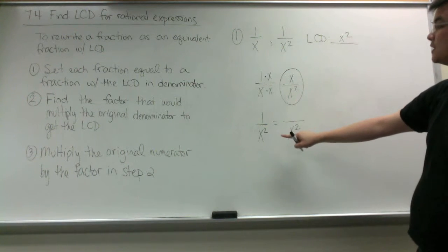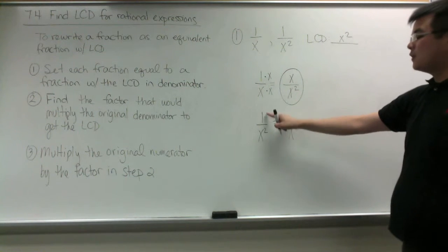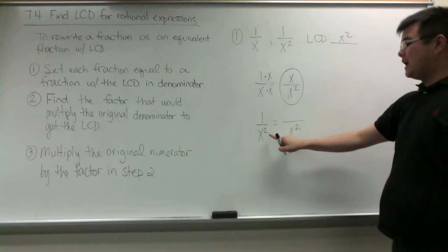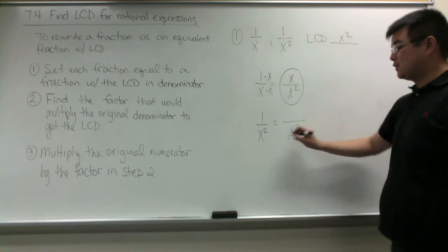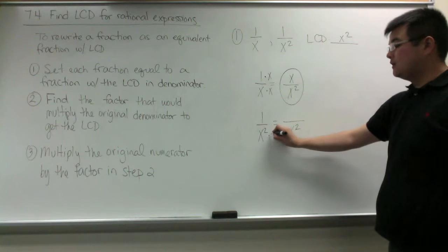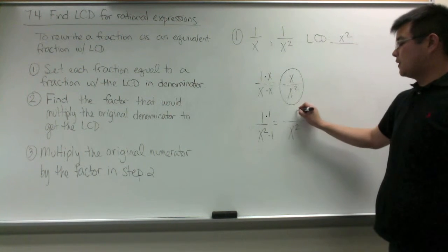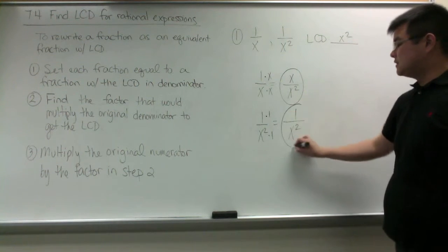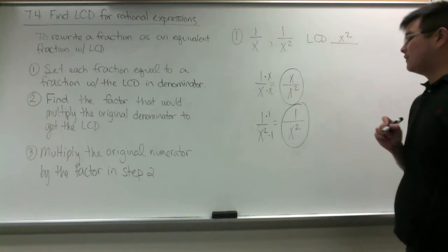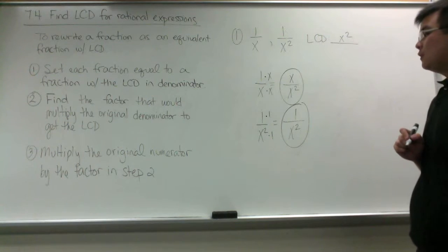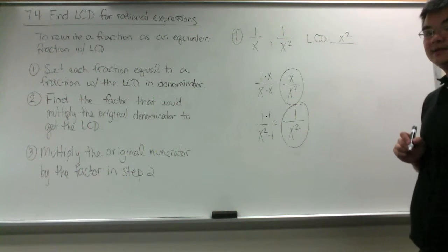We are going to do the same thing for 1 over x squared. x squared times what would give us x squared? The answer is 1. So we multiply the numerator by 1. This gives us the equivalent fraction with the LCD in the denominator.